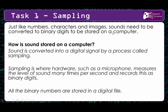Just like numbers, characters, and images, sound needs to be converted to binary in order to be stored on a computer. Everything inside a computer is just ones and zeros, or switches being switched on and off. In order to play or record a sound, that data needs to be converted into a binary set of numbers. Sound is converted into a digital signal by a process called sampling. Me talking now is creating an analog sound wave, but computers don't work in analog - everything has to be ones and zeros. To convert this analog wave into digital you use something called sampling, where hardware such as a microphone measures the level of sound many times per second and records this as binary digits.